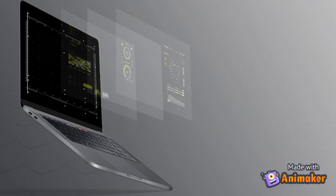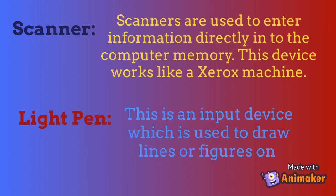The next input device is the scanner. Scanners are used to enter information directly into the computer memory. This device works like a Xerox machine. We all know what a scanner is — it is also an input device. There is also the light pen, which is an input device used to draw lines or figures on a computer screen. I would recommend you to pause the video and take a screenshot of these definitions as they are really very important.